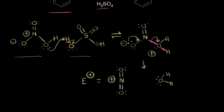Up here, we also create the conjugate base of sulfuric acid, so HSO4 minus is formed. Now let's go ahead and show what happens now that we've formed our electrophile.